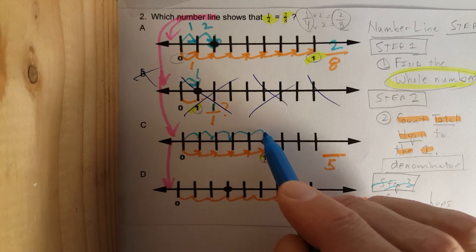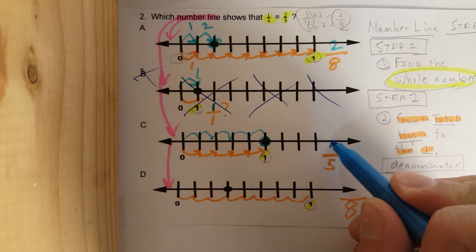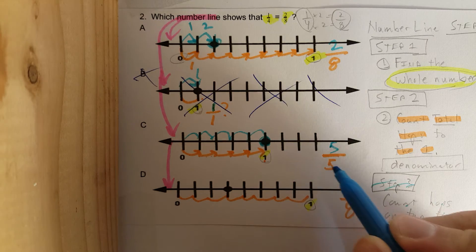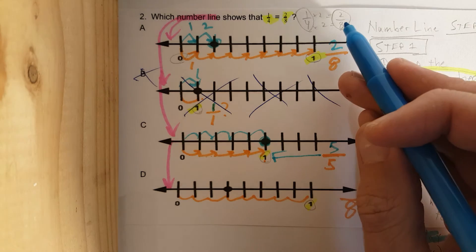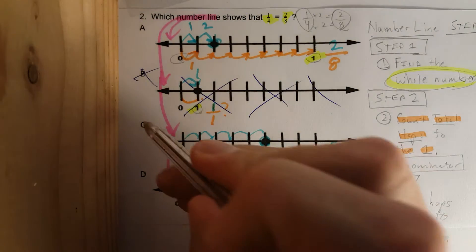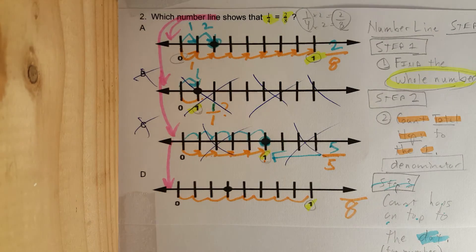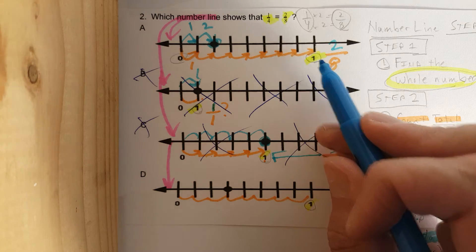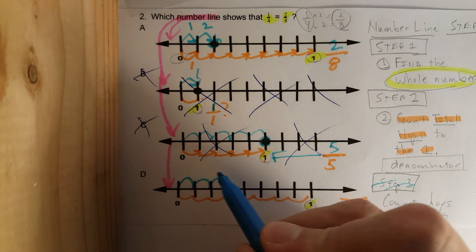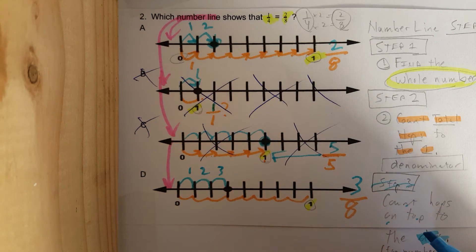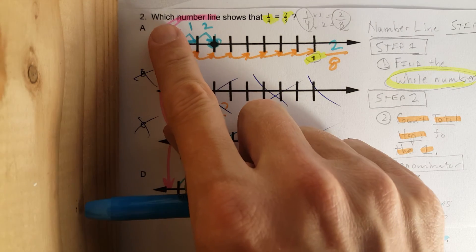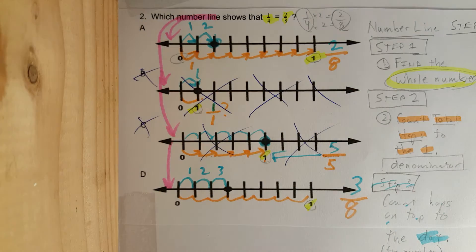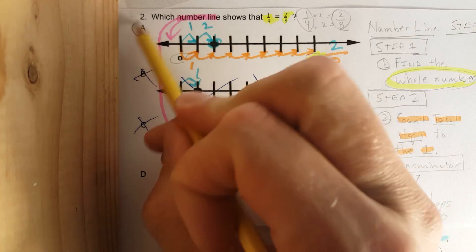For C, step three — count the hops on top to the dot: one, two, three, four, five. That dot is right on the whole number one, which is five over five equals one. But we're not looking for one, we're looking for two over eight, so C is incorrect. On D, there are eight hops on the bottom, and counting to the dot: one, two, three — that's three over eight. We need two over eight, so D is wrong. The correct answer is A.